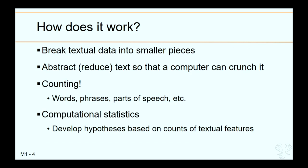How does text analysis work in general? It usually follows these basic steps. First, the text needs to be transformed from something human readers are familiar with into something that the computer can read. This means we often need to break apart the text into smaller pieces and abstract it into something the computer can crunch through algorithms. Then counting happens: the computer will count words, phrases, parts of speech — whatever you define — so it can start processing the text. These counts are used to identify characteristics of the text, and researchers then apply algorithms, often computational statistics, to develop hypotheses based on the patterns they see.